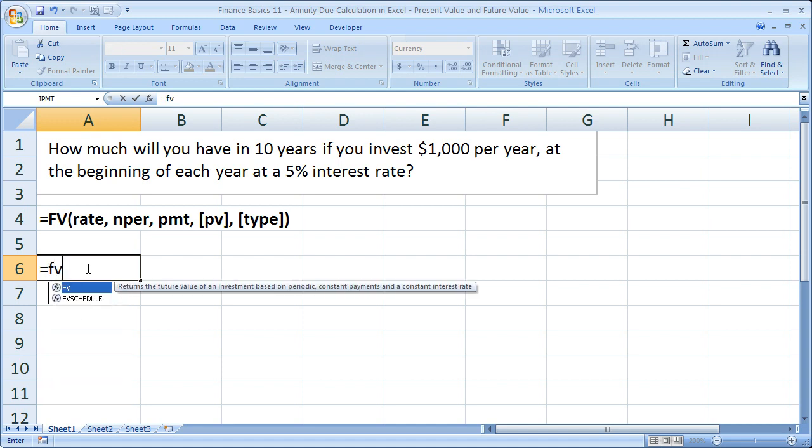Equals FV open parenthesis. Now first thing, let's make sure that our periods are all equal. So the interest rate is by default set for one year—5% interest rate. Our periods are all in years, so we're good with that.